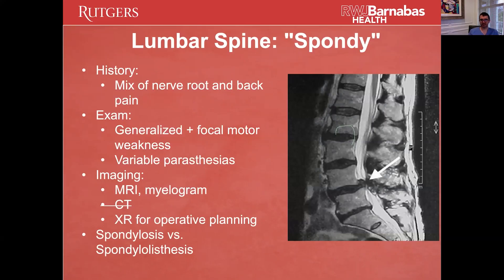The next type of spine pathology is what we call a spondy. There are a lot of different words used to describe this, but it's basically spondylolisthesis — a slip of one vertebral body out over another. There are three different grades based on how far forward you're slipped. These patients will have a mix of nerve root pain and back pain; the slip itself causes tightness and puts tension on the joints in the lumbar spine.